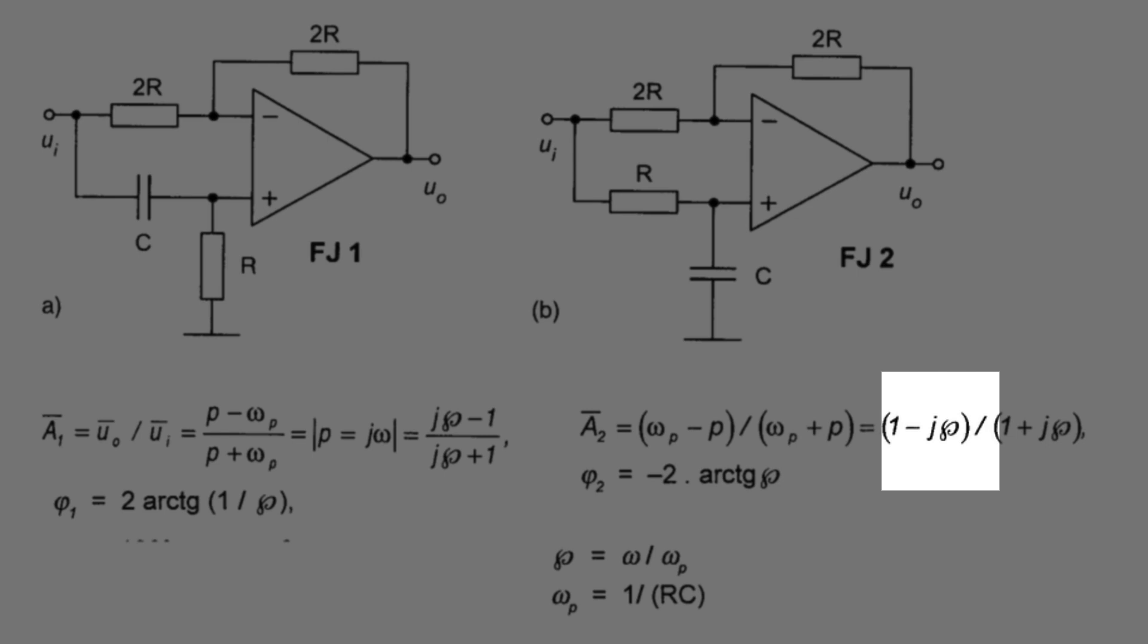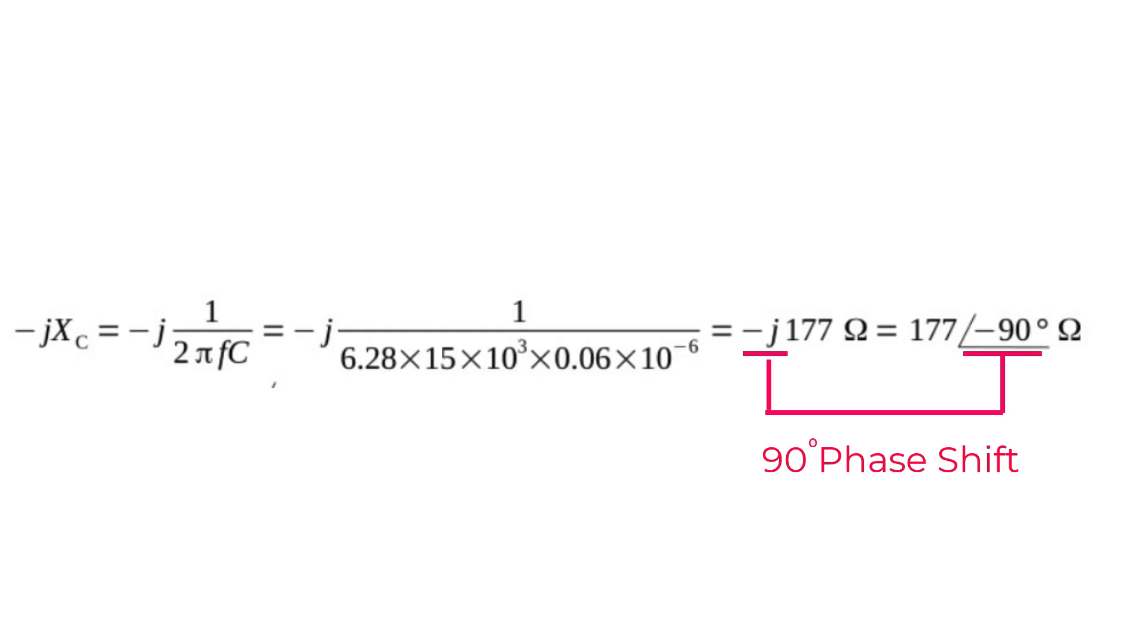When the calculation is finished, any term with the imaginary number j in it is out of phase, and any number with no j is in phase. Complex numbers can be very useful for other problems too.